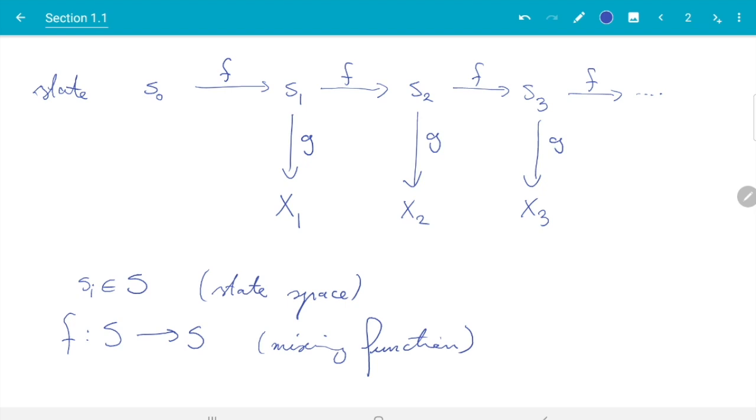And then from these states we will be able to obtain the output, the sequence of numbers we are promised by a pseudo-random number generator. So there is a second function g which maps the state into numbers. I would call this the output function. Many pseudo-random number generators have this structure.